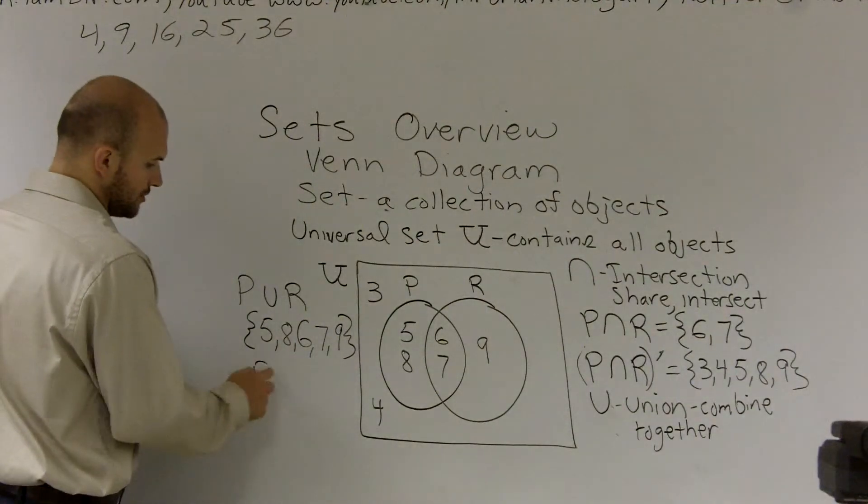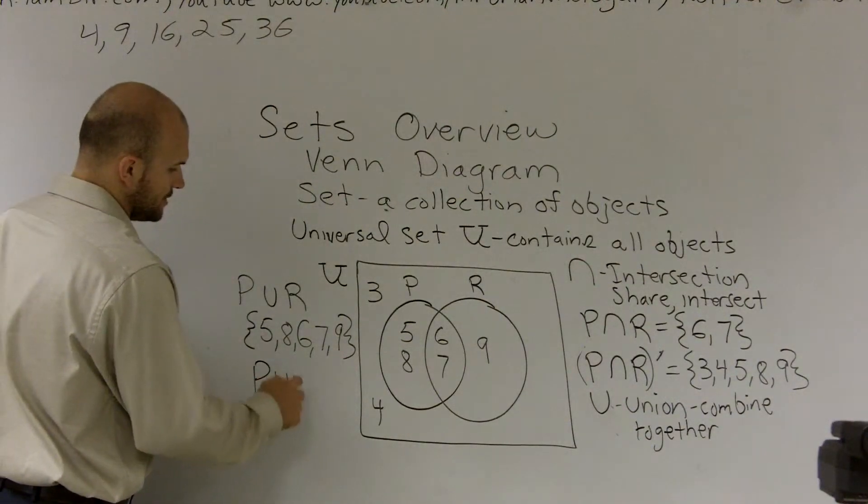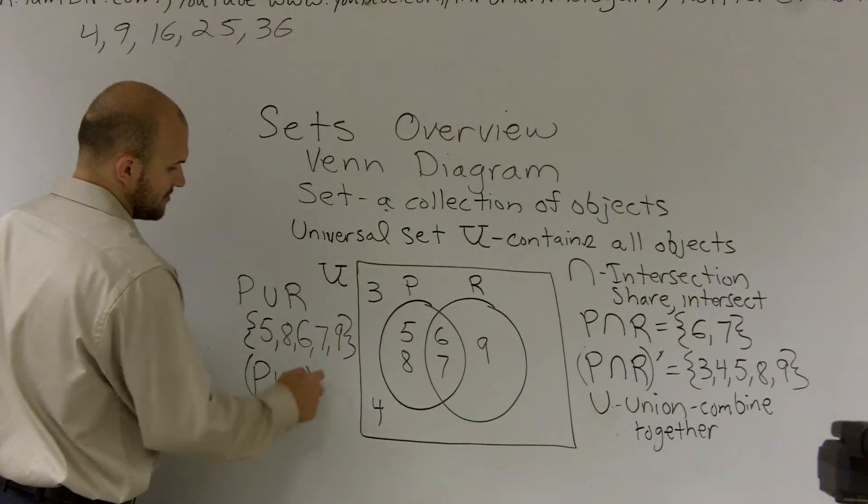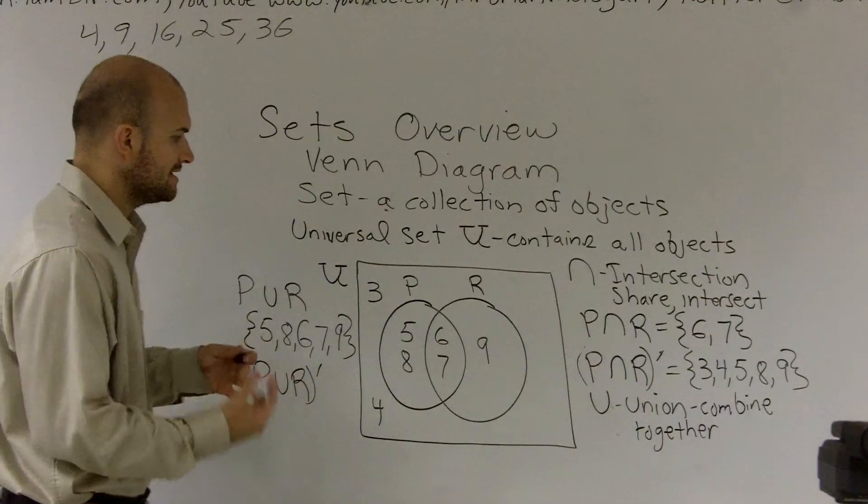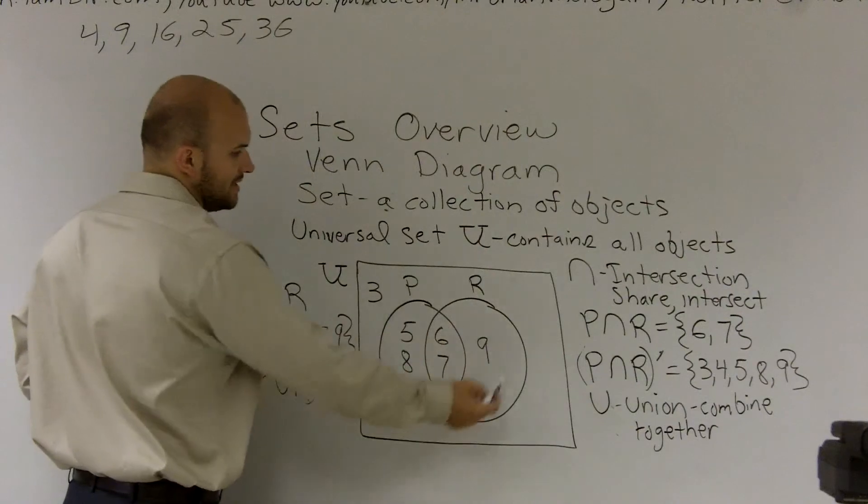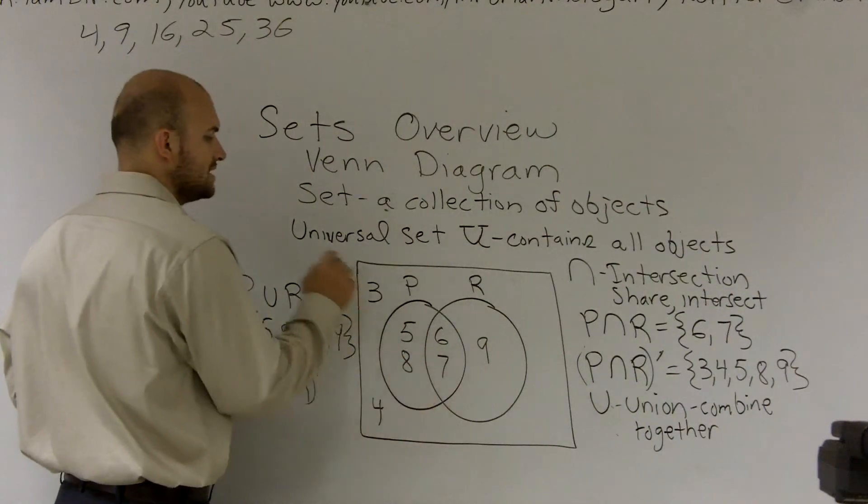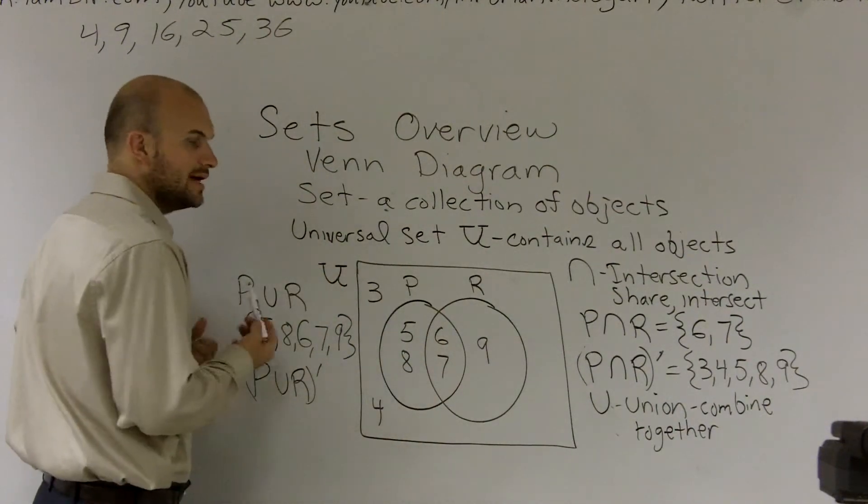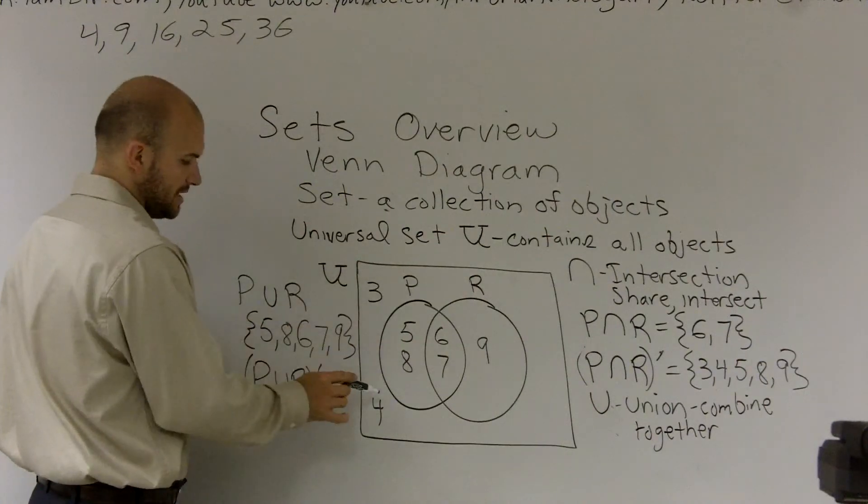Then, if I wanted to go a little bit farther and say, what about P union R complement? Now what I'm going to be doing is, what is everything that's not in P union R, but that is still within our universal set? And the only two elements that we have are 3 and 4.